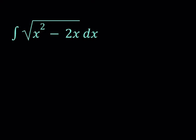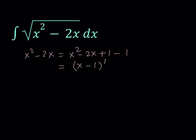To solve this problem I'm going to complete the square. Starting with x squared minus 2x, I'd like to write it as x squared minus 2x plus 1 to make it a perfect square, and then minus 1. So this becomes the quantity x minus 1 squared minus 1.